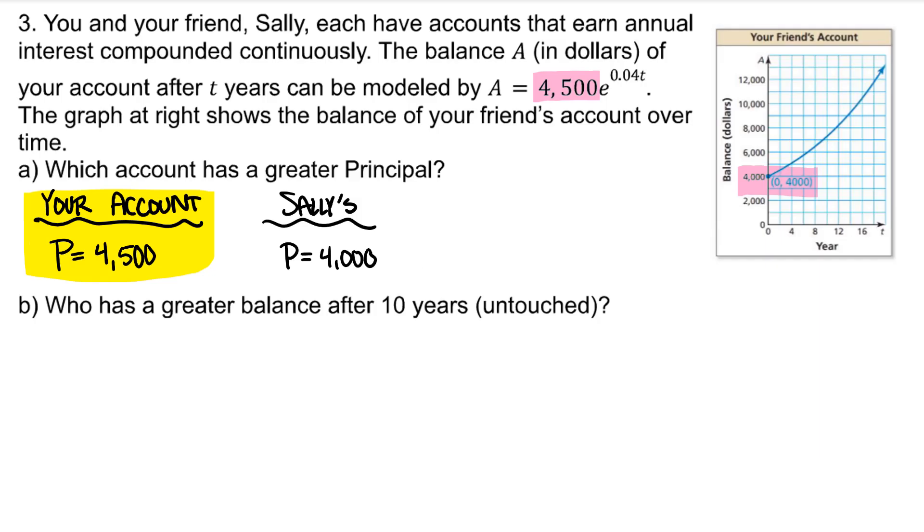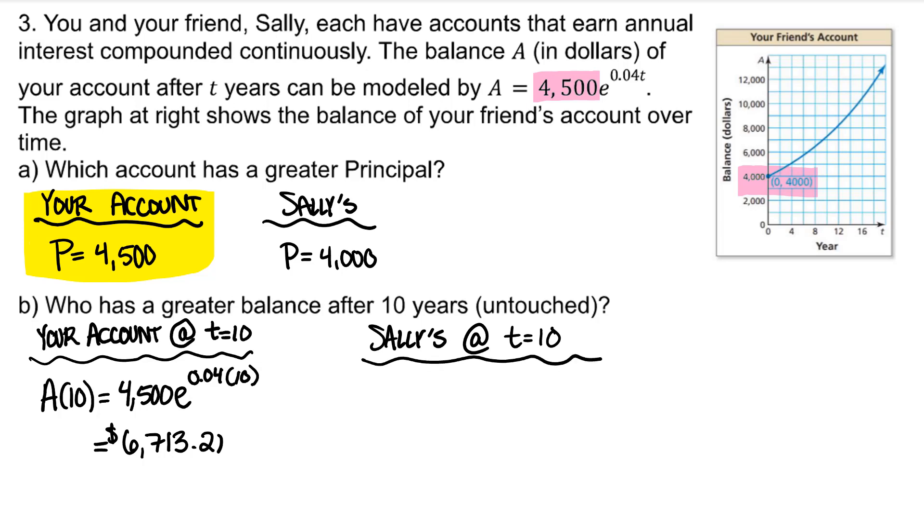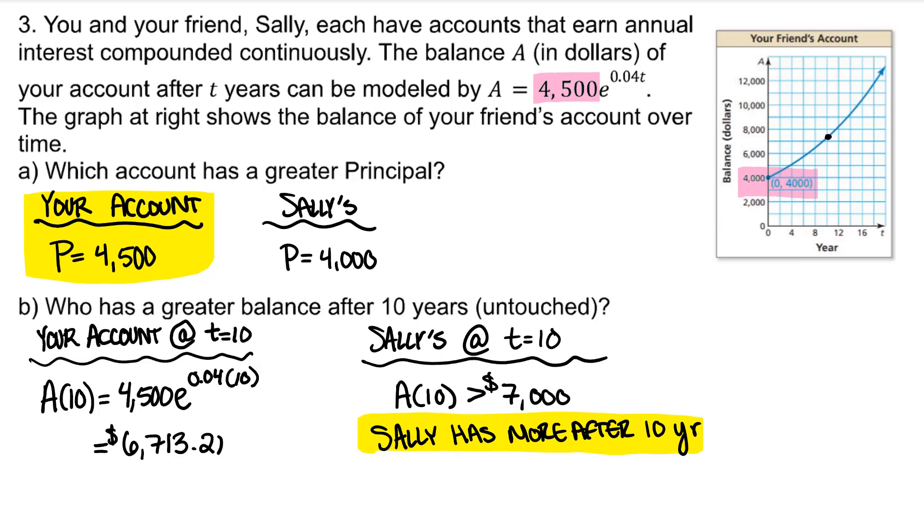Who has a greater balance after 10 years if the money is untouched? For your account, plug in t = 10 into the equation. And that would be $6,713.21. To find the amount in Sally's account at t = 10, let's look at the y value at t = 10 years on the graph. Sally has over $7,000 in her account after 10 years. So Sally has more money after 10 years. And there's your introduction to the natural number e.